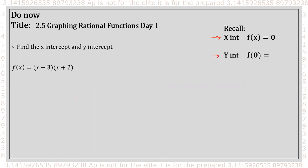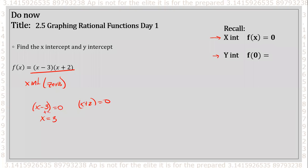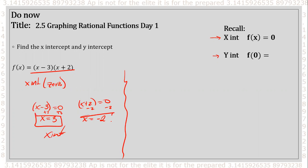Hopefully you were able to get that. If I want to find my x-intercepts and zeros, I can see that this function is in factored form, so I can take each individual factor — x minus three and x plus two — and set each equal to zero. This gives me x equals three and x equals negative two. So these are my x-intercepts.